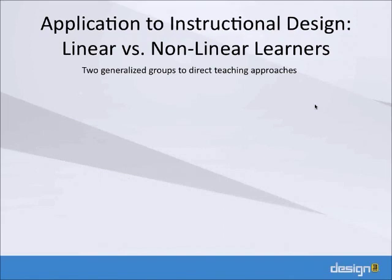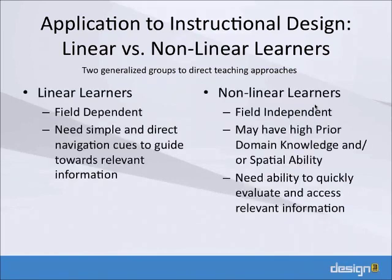The two groups of learners we divided people into are linear and nonlinear learners. The internet is inherently nonlinear, so it offers great opportunities for nonlinear learners. But we can also accommodate linear learners at the same time through interactive dynamic adaptation on the back end. Linear learners are going to be field dependent — they want to know where they exist in the learning process, and we need to give them simple and direct navigation cues.